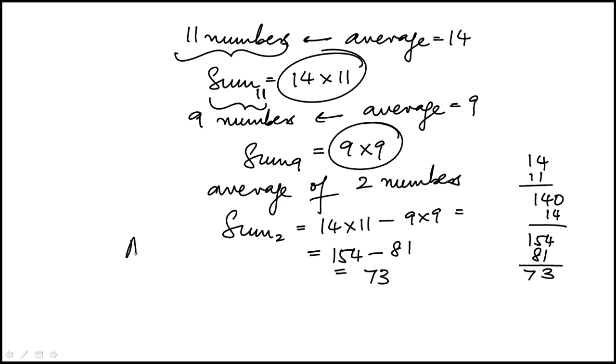And so to find the average of those two numbers, I just divide their sum by 2. And this is equal to 36.5. So that's the correct answer.